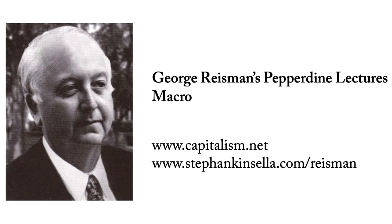Fiduciary media are created when and to the extent that the bank lends out any part of the currency deposited. Item 2: the bank lends $80 in currency — it is minus currency $80 and plus IOUs from the public of $80. The borrower gives an IOU for $80 and receives $80 in currency. The bank's total asset value is unchanged. The borrower is now plus currency $80 and has a liability — an IOU to the bank for $80.